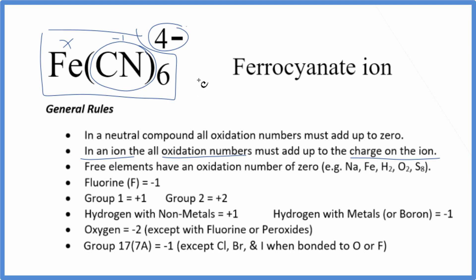We have 6 of these. So we can just set an equation up now. We can say we don't know the iron. We do know that we have minus 1 times 6, so we have a minus 6. And all of that is going to equal minus 4.